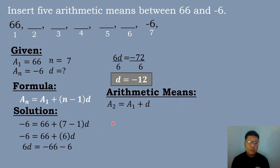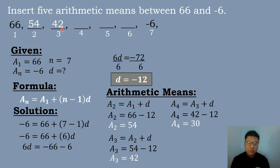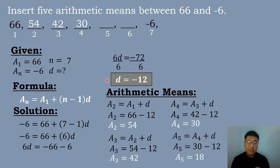Now to solve for the arithmetic means, we add the first term plus the common difference: 66 plus negative 12 equals 54. So the second term is 54. To get the third term, add 54 plus negative 12, which equals 42. Then add the third term plus the common difference: 42 plus negative 12 equals 30, which is the fourth term. To get the fifth term, add 30 plus negative 12, which equals 18.